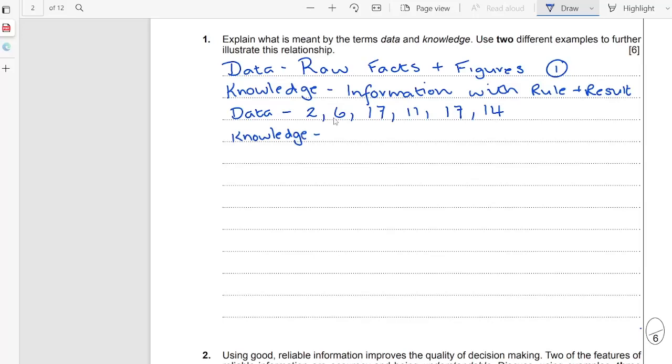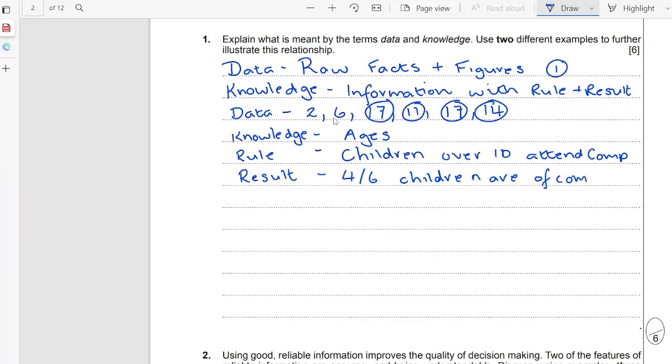Okay, so I've got a different set of numbers and our knowledge. So realistically you need to kind of give it a bit of information even though you don't give the mark for it. So our information could be the fact that these are ages, and what's our rule? Then we need a result. So we can say the rule is children over eleven or ten attend college. Therefore the result is four out of six children are of college age. So you've got one mark for your data and then one mark for your rule and result.